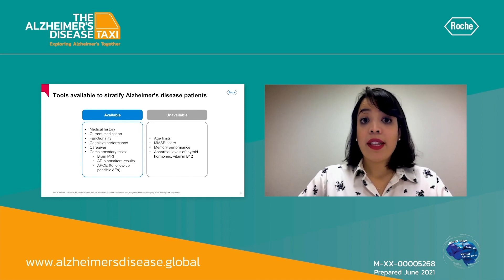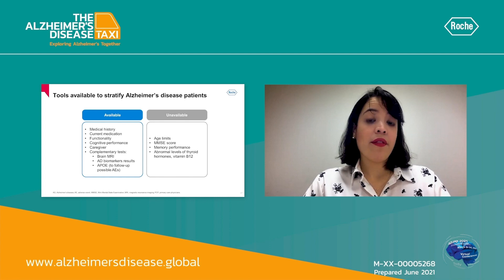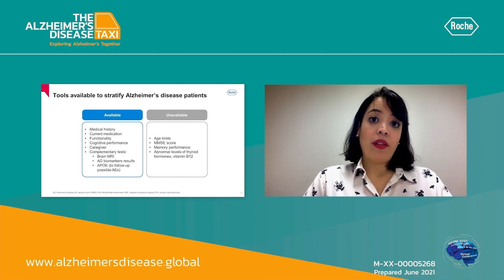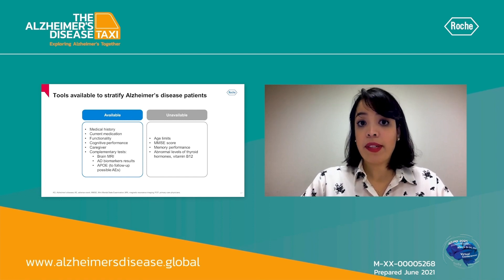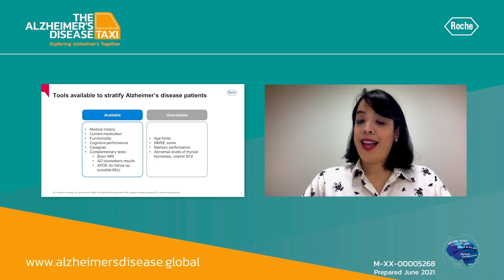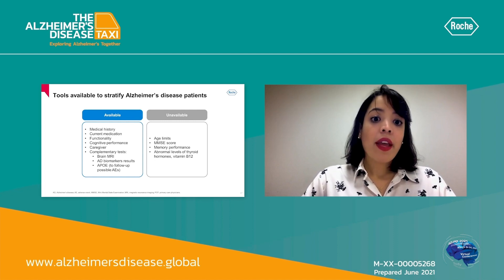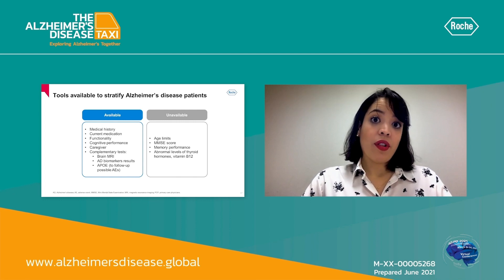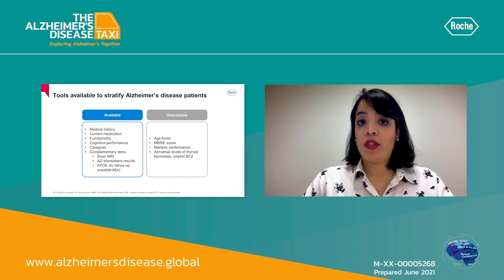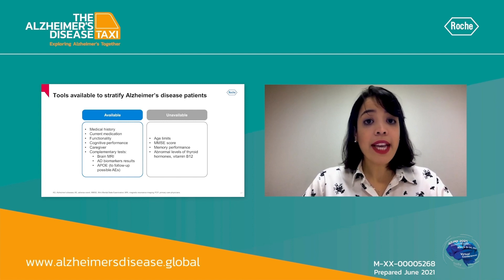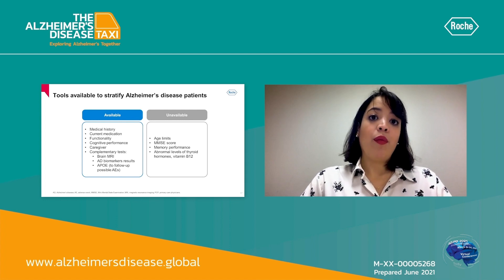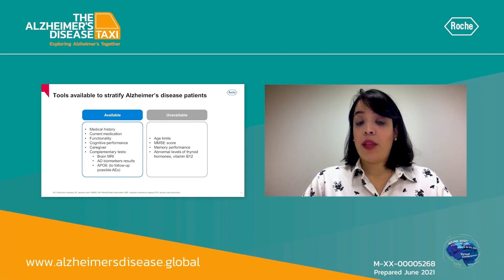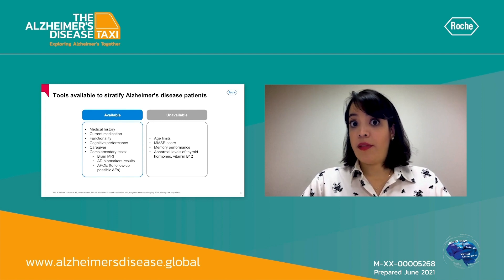It is also important to have a caregiver — not only to provide information about the patient's functionality, but also to help in case of adverse events. For complementary tests, we will need a baseline brain MRI and biomarker results to confirm that the patient has a biological process of Alzheimer's disease. It may also be important to know the APOE genotype, because that will be informative in case we face possible adverse events.